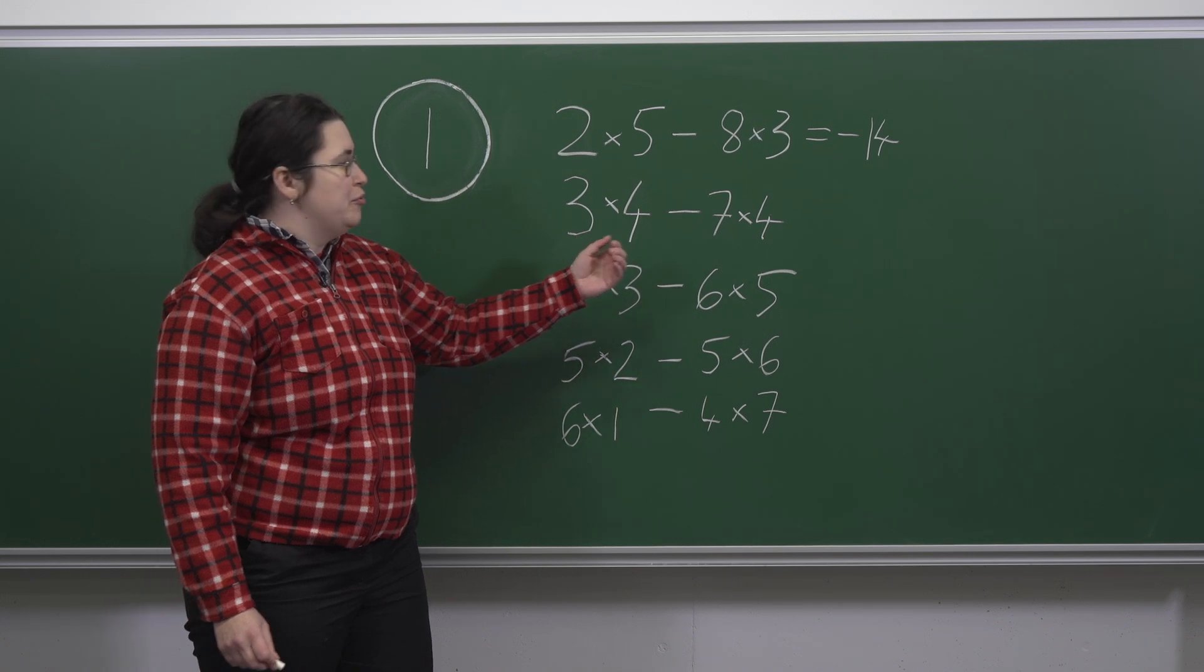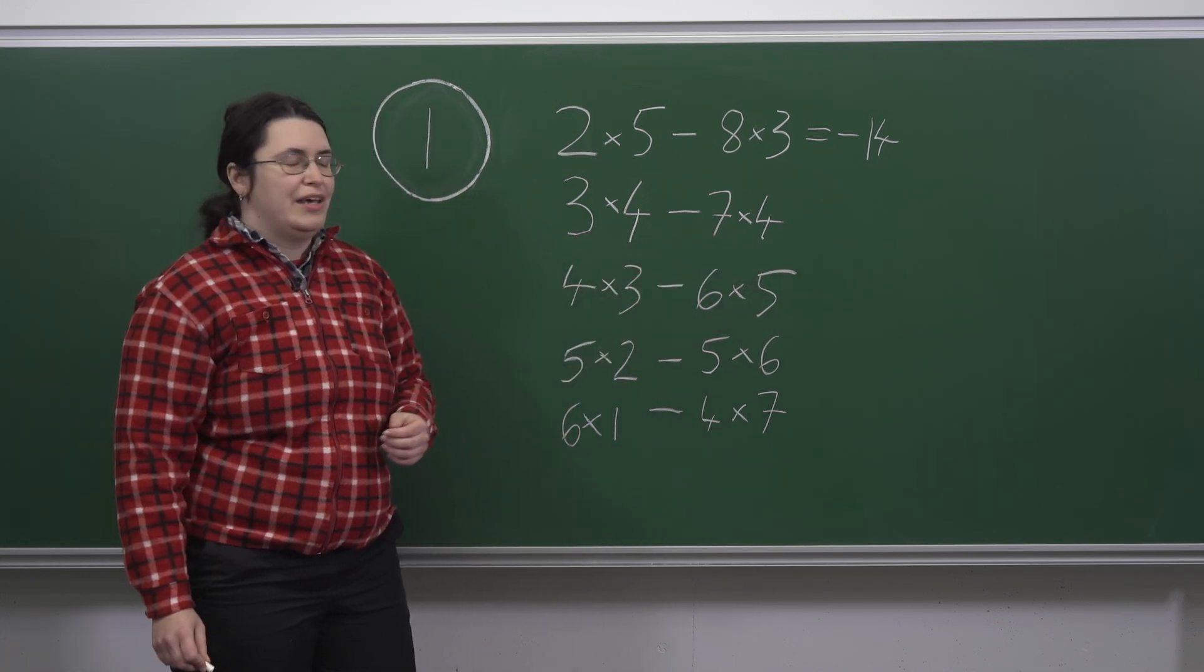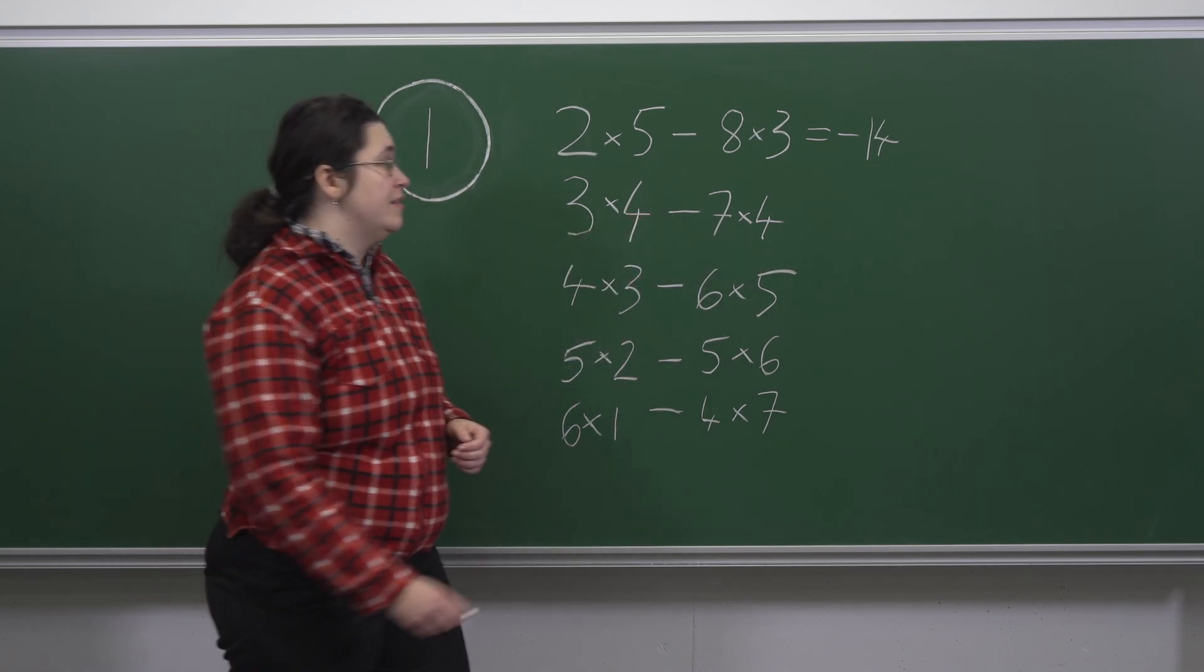Similarly, 3 times 4 is 12, 7 times 4 is 28, the subtraction gives us minus 16.